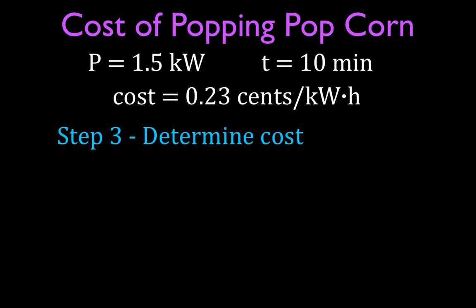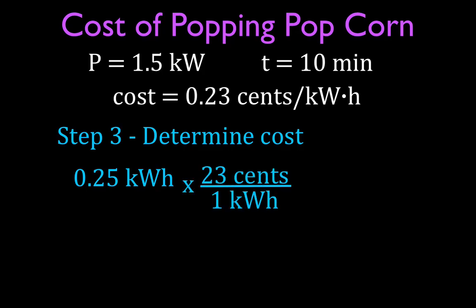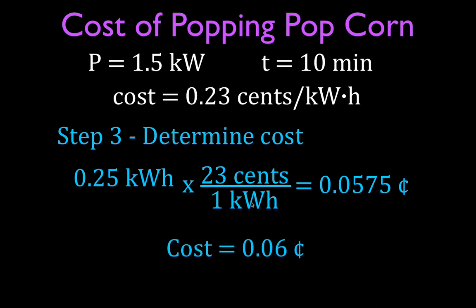Now we figure out the cost. We know it costs 23 cents per kilowatt hour, and we used 0.25 kilowatt hours — less than one kilowatt hour, so it will be less than 23 cents. We only used a quarter of a kilowatt hour, so 0.25 times 23 cents equals 0.0575 dollars, which rounds up to about six cents. So popping popcorn at 1500 watts for 10 minutes costs you six cents.